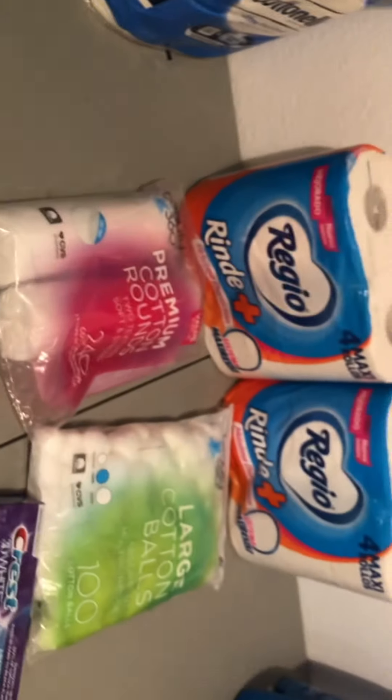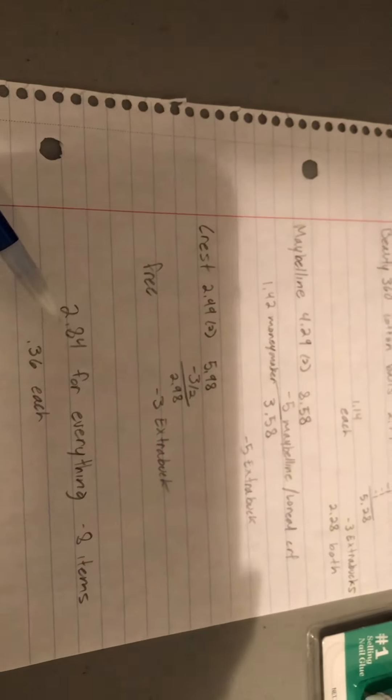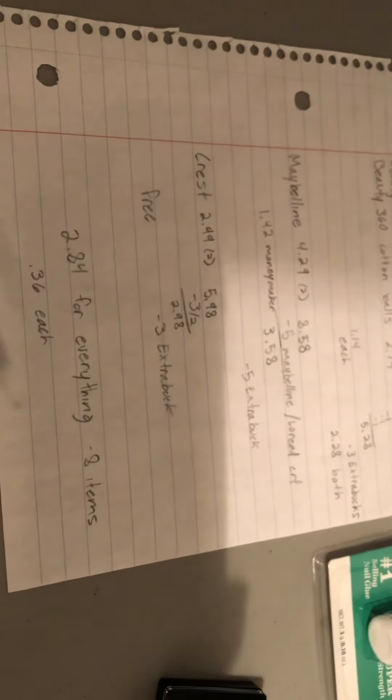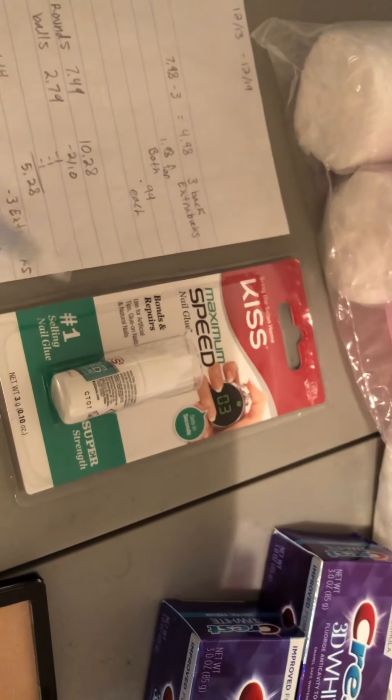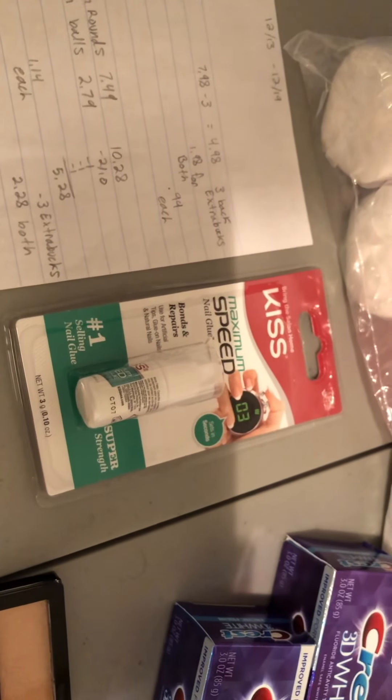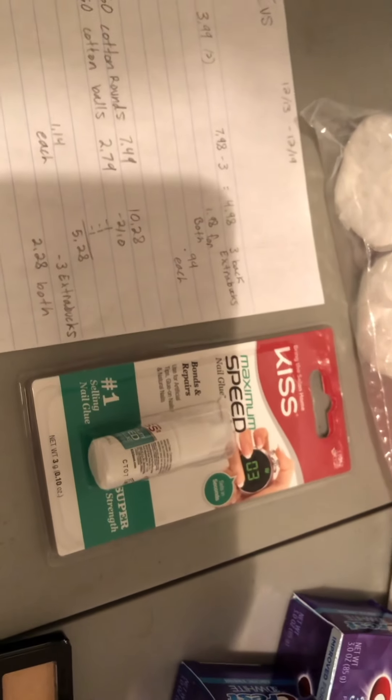For all these items it's a total of $2.84 for everything which is eight items or $0.36 each. For the Kiss, at my store this Kiss nail glue was $3.99 and my account got a $4 off beauty purchase.